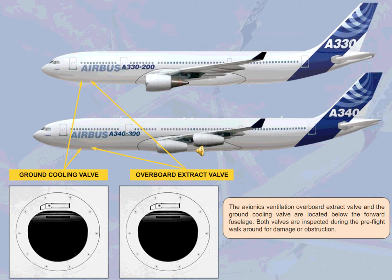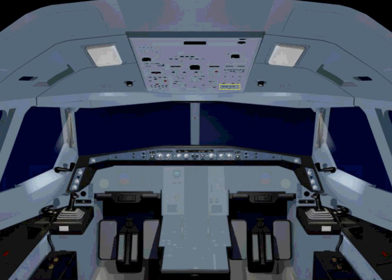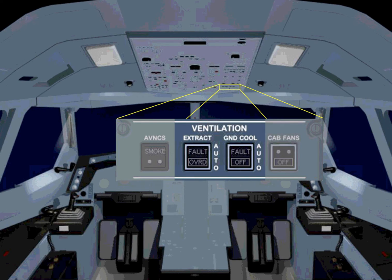A ventilation panel on the overhead panel contains two push button switches associated with the ventilation system. During the pre-flight cockpit scan, you should confirm that these switches are in the lights-out position. The avionics ventilation system will then operate automatically and require no pilot input.